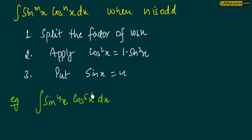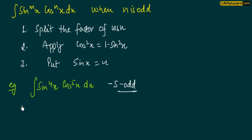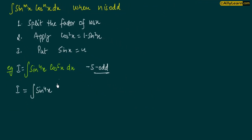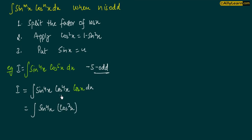So friends, आप देख सकते हैं n odd है, तो यह process apply हो सकता है. तो सबसे पहले cos की single power को अलग करेंगे. So we will have sin⁴x · cos⁴x · cos x dx. अब cos⁴x को cos²x whole square लिखते हैं. So we can write this as sin⁴x · (cos²x)² · cos x dx.